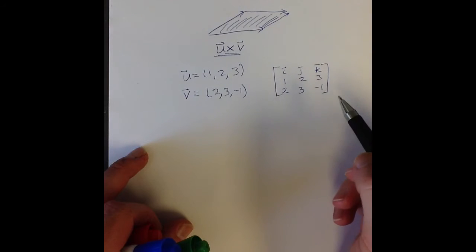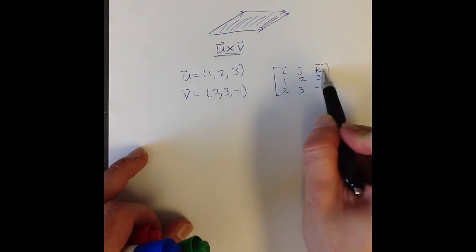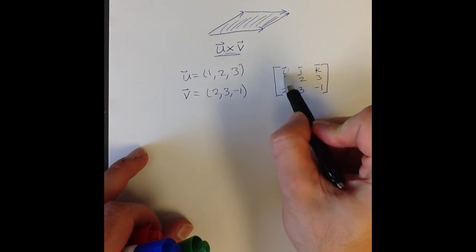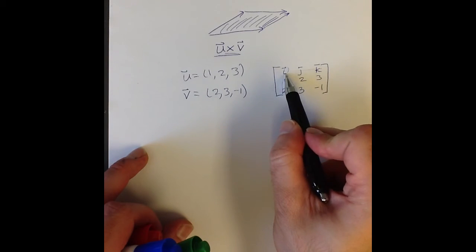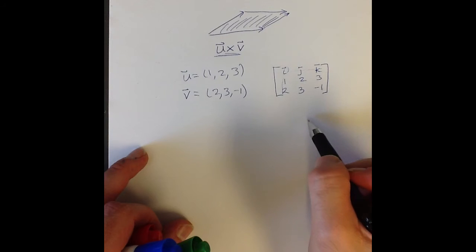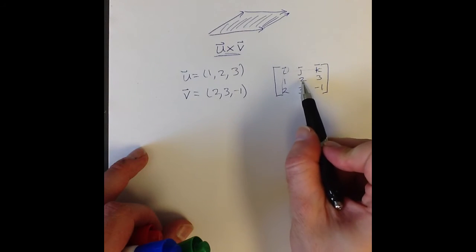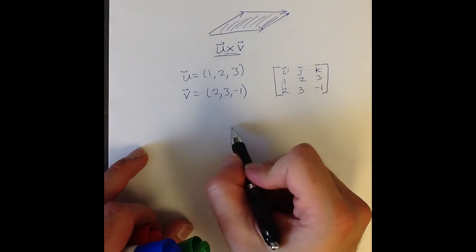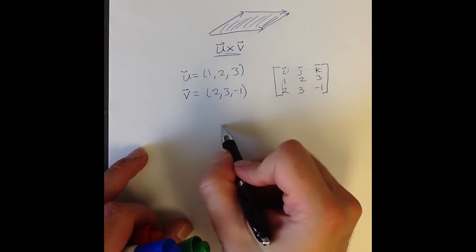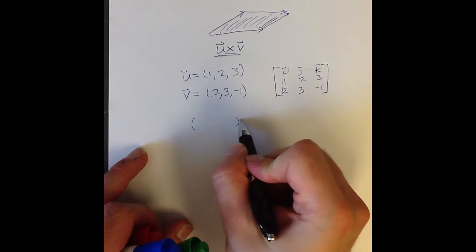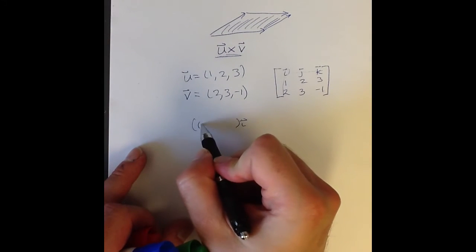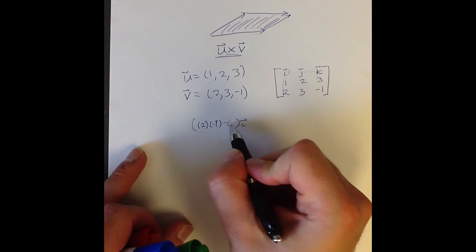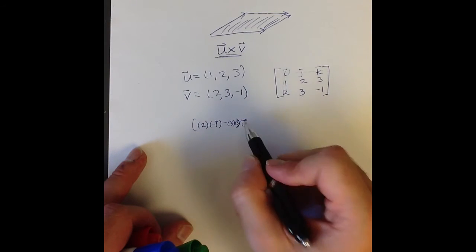We go across the top row — i, j, k. For the i entry, we cross out the row and the column corresponding to i. That leaves us four numbers. We multiply them in this pattern: 2 times -1, and then subtract 3 times 3. Then multiply that quantity by i. So we get i times (2×(-1) minus 3×3).